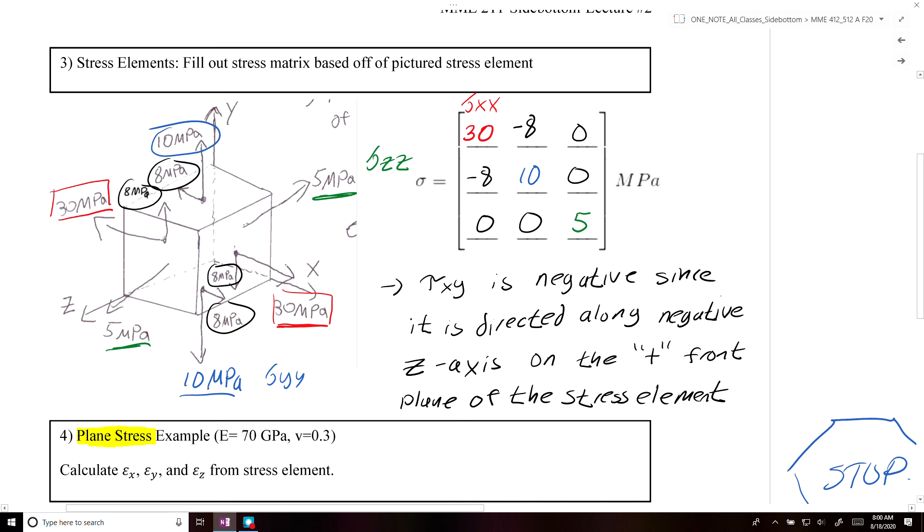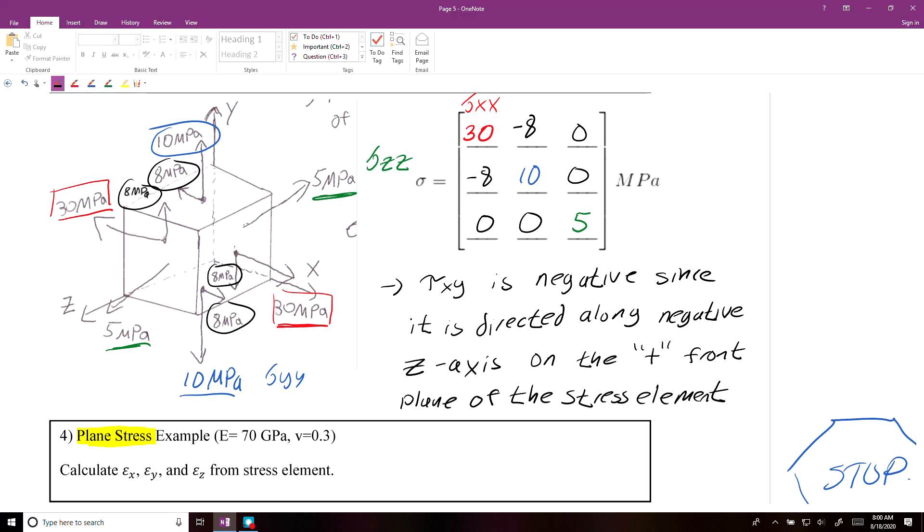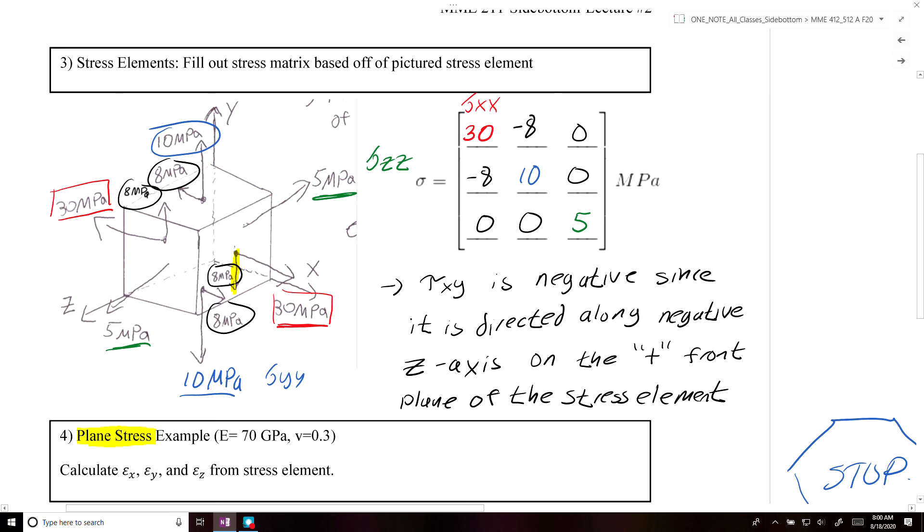So just to recap, tau xy is negative in this case, since it is directed along the negative z-axis on the positive front plane of the stress element here. So what I'm referring to specifically is this arrow here is pointing down on the front plane. If it was pointing along the positive y-axis, this would be a positive stress, while since it's going along the negative y-axis, this is a negative shear stress.